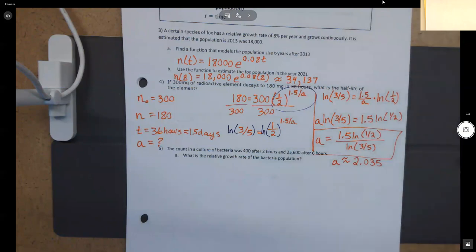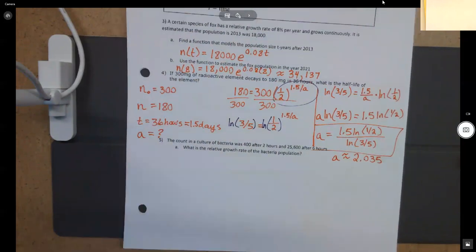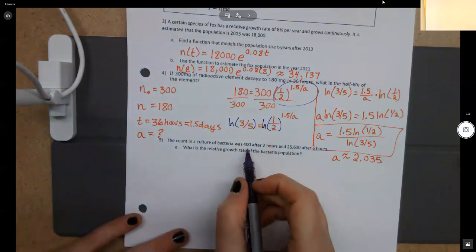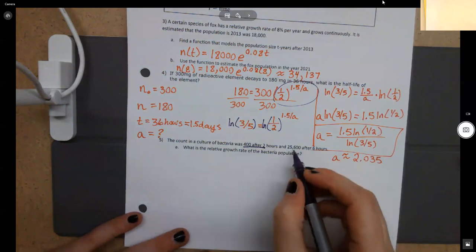Before we move on to almost the last problem, does anybody have any questions on that guy? Feeling good? All right. So the count in a culture of bacteria was 400 after two hours and 25,600 after six hours. So what we have is that we have two different data points, one after two hours and one after six hours. The question we want to ask is what is the relative birth rate of bacteria? Makes sense. We usually don't get to see something right when it happens. We usually see it after it's already been growing and times passing. So what I'm going to do for this one is I'm just going to write down the two formulas for the two data points that I have. I have one at two hours and one at six hours.